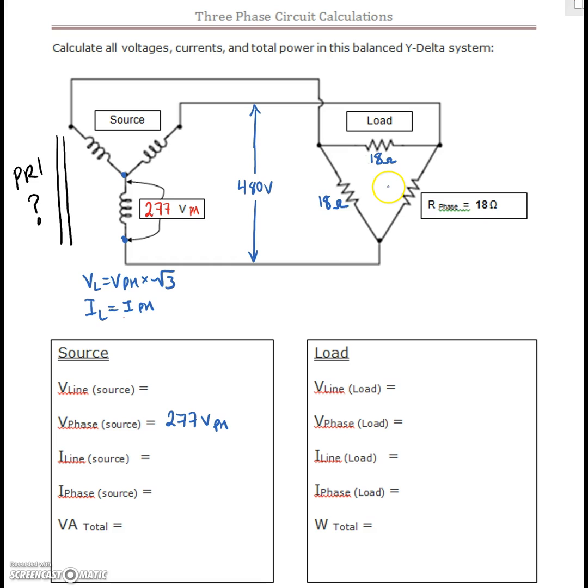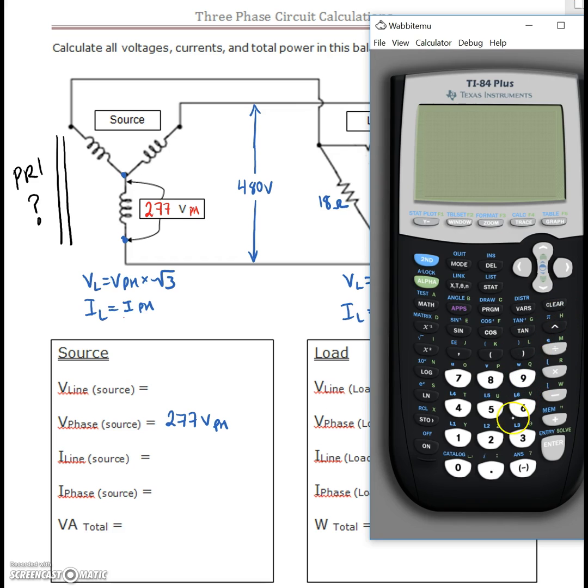Over here for the delta, we know that the voltages are identical on both the line and the phase, but our line current is greater than the phase current by a factor of root 3. So if we take 277 and multiply by root 3, that gives us 479.77, so I'm going to round that up to our standard voltage of 480 volts.